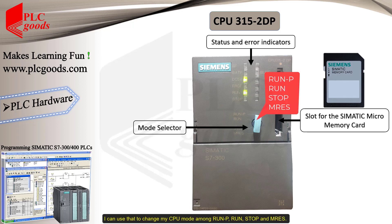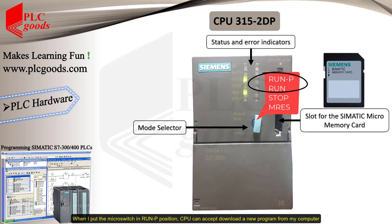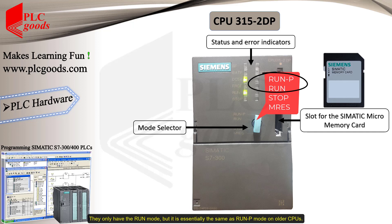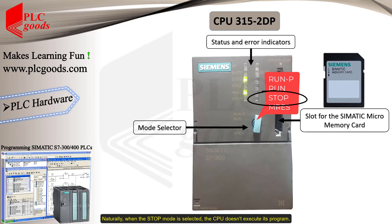After the indicators, this empty slot can be used to insert a SIMATIC Micro Memory Card. The next important part is this mode switch. I can use it to change my CPU mode among RUN-P, RUN, STOP, and Memory Reset. When RUN-P or RUN mode are selected, the PLC executes its program, but with a small difference: in RUN-P position, the CPU can accept and download a new program from my computer, whereas in RUN mode the PLC will reject any changes or downloads. Note that newer CPUs don't have a RUN-P position — they only have RUN mode, but it functions essentially the same as RUN-P on older CPUs. When STOP mode is selected, the CPU does not execute its program.